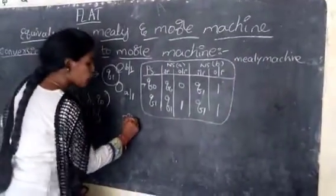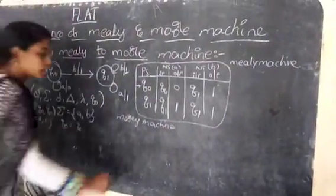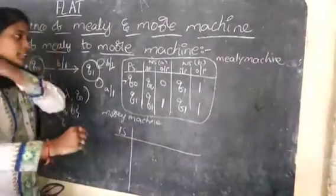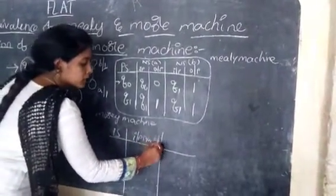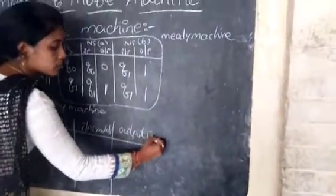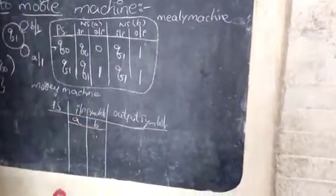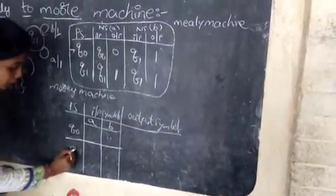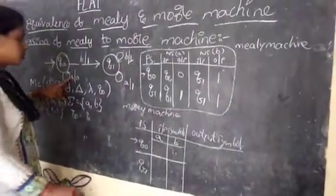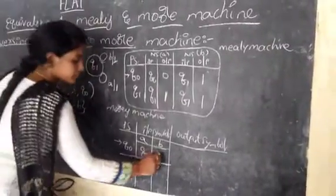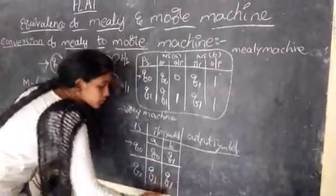Now we will draw the Moore machine transition table. The Moore machine transition table has: present state, next state on A, next state on B, and output symbol. The input symbols are the same — A and B. States are Q0 and Q1. Q0 on A goes to Q0, Q0 on B goes to Q1, Q1 on A goes to Q1, and Q1 on B goes to Q1.